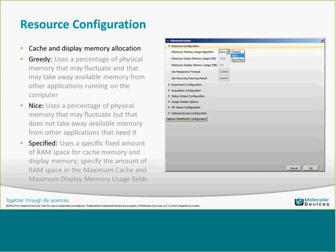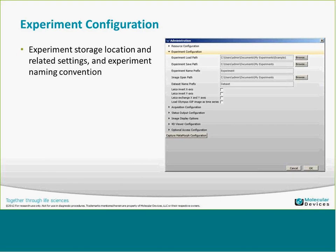I recommend selecting Greedy so the software can utilize as much system resource, memory cache, and so forth as it can during operation — being greedy is a good thing here. The experiment storage locations are the default directories for the experiment load path and save path, plus the image open path. You can set default names for the experiment and the default data set prefix name.